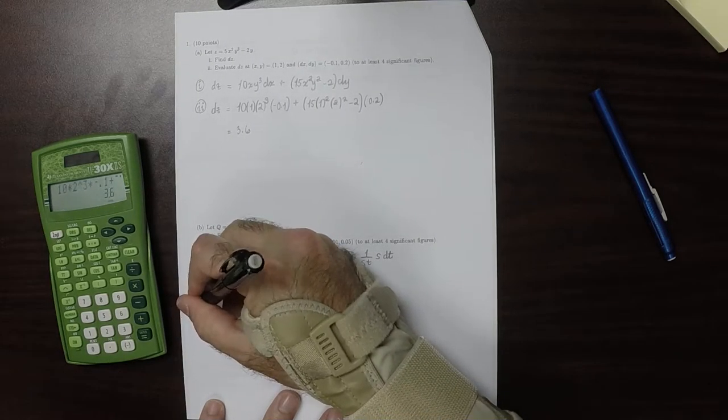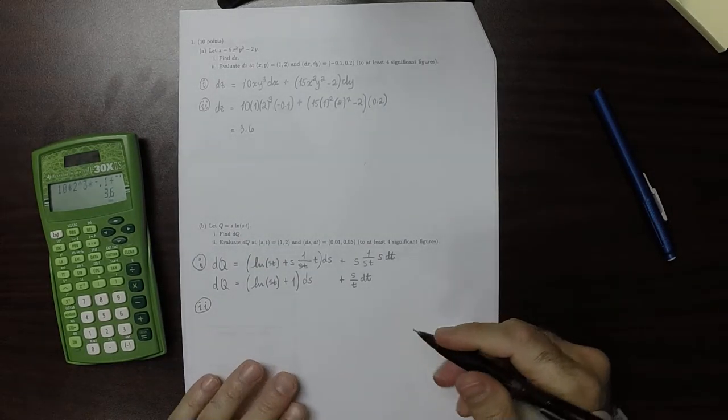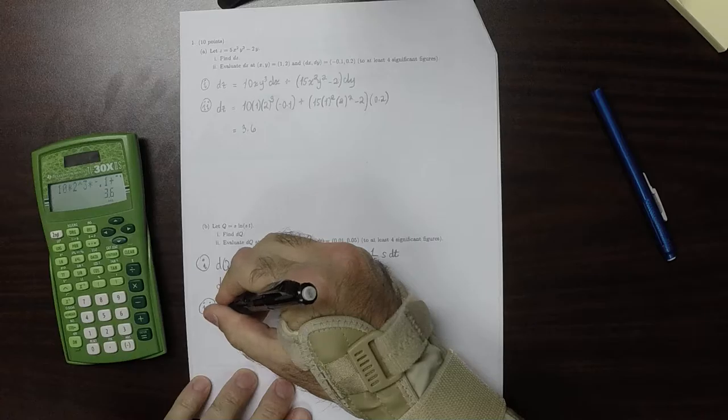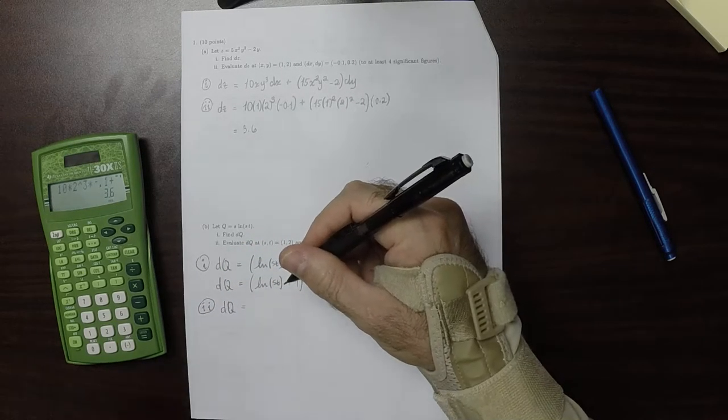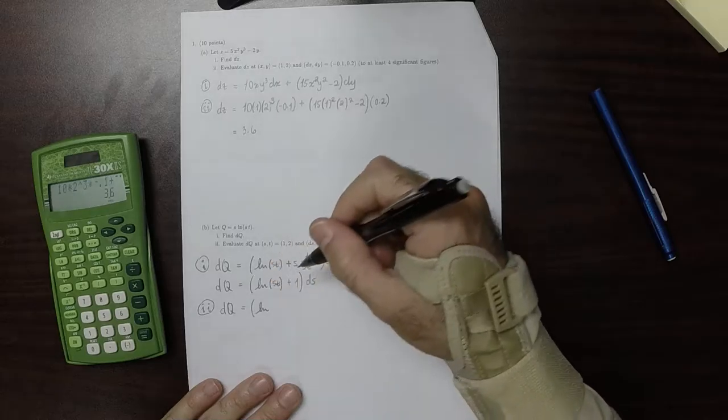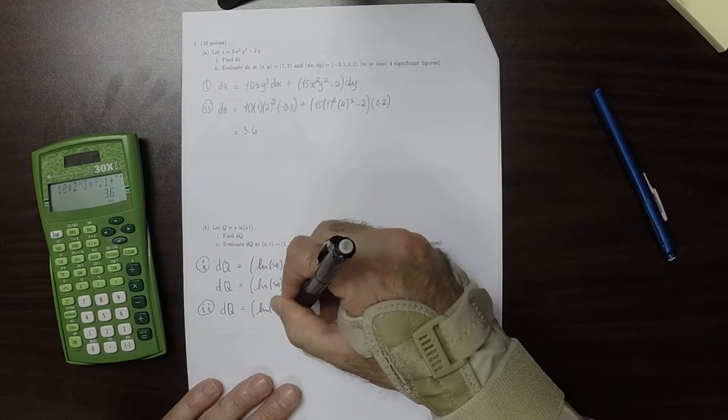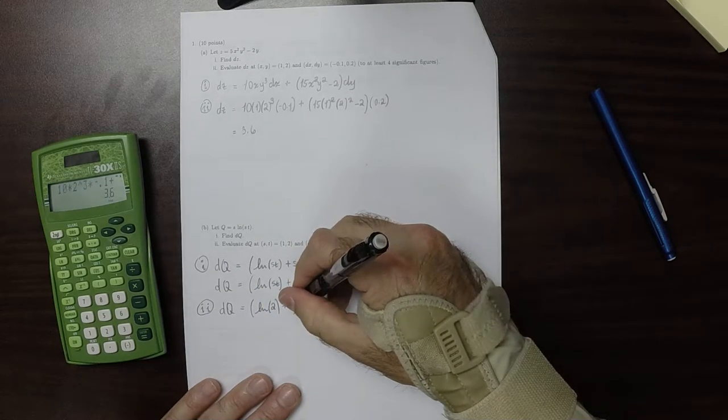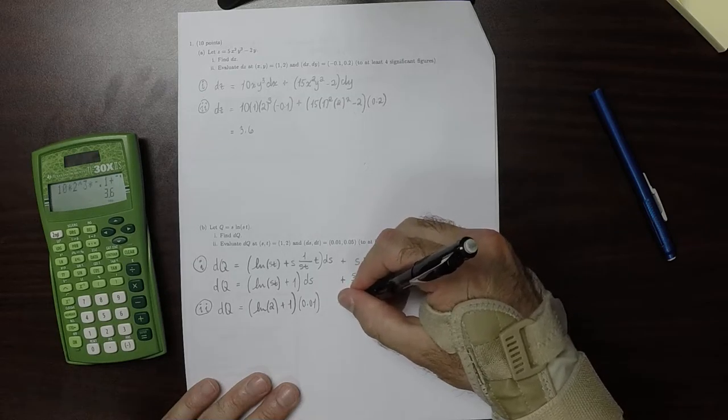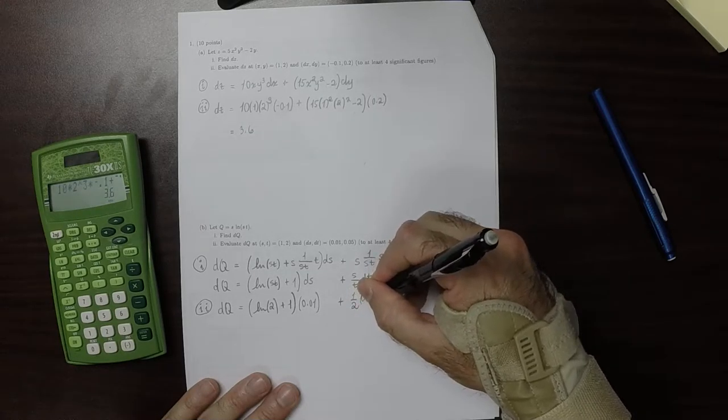OK, then part ii. Evaluate at that particular position. So then dq is log of 1 times 2, so that would be log of 2 plus 1, multiplied by ds which is 0.01, plus s over t, which is half times 0.05.